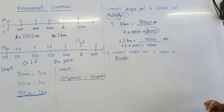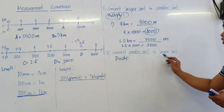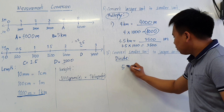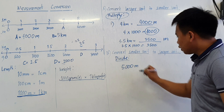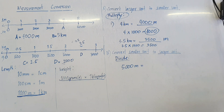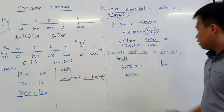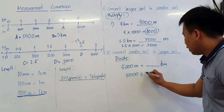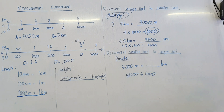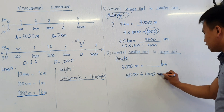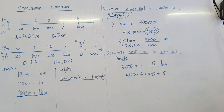How about if we convert from a smaller unit to a larger unit? So the opposite — we need to divide. For example: 5,000 meters equals how many kilometers? So 5,000 divided by 1,000. Divide by 1,000. So the answer is 5. So 5,000 meters equals 5 kilometers.